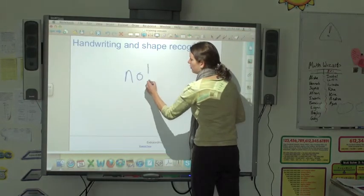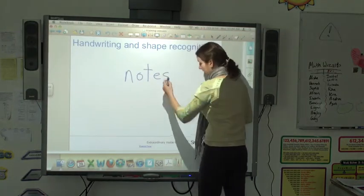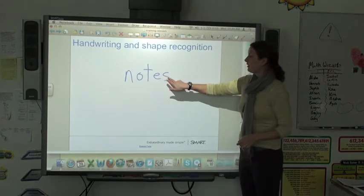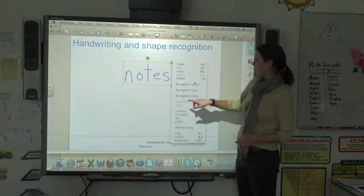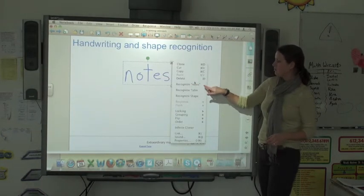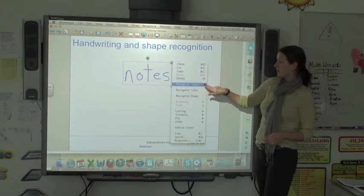So if I write the word notes, for example, and I put down my pen, by clicking on this word, I'll get that drop down menu again. And you'll see here, recognize, and then it has my word in quotation marks.